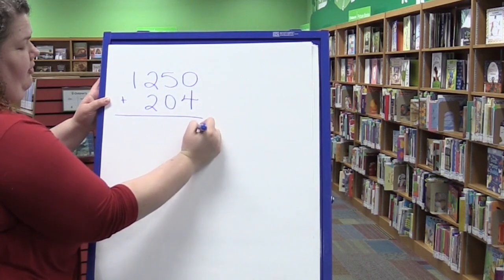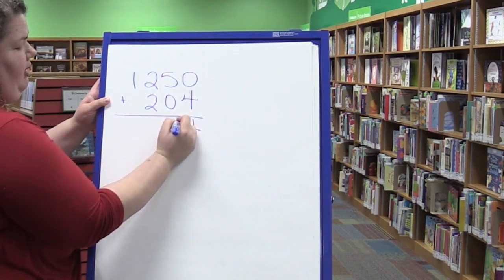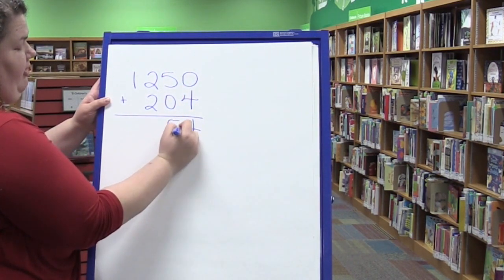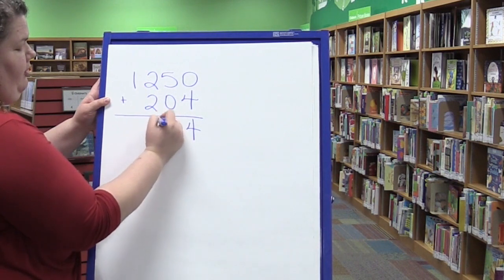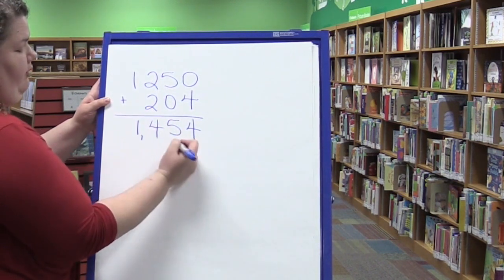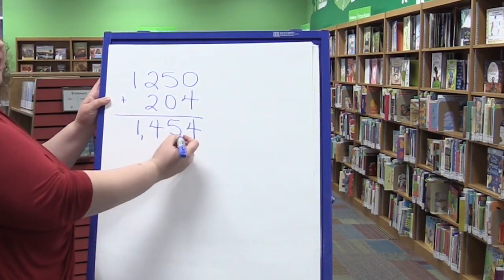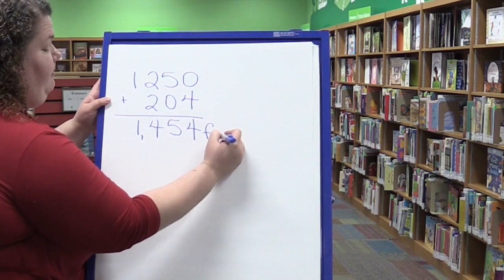0 plus 4 is 4. 1 plus 0. 5 plus 0 is 5. 2 plus 2 is 4. 1. I have 1454 feet.